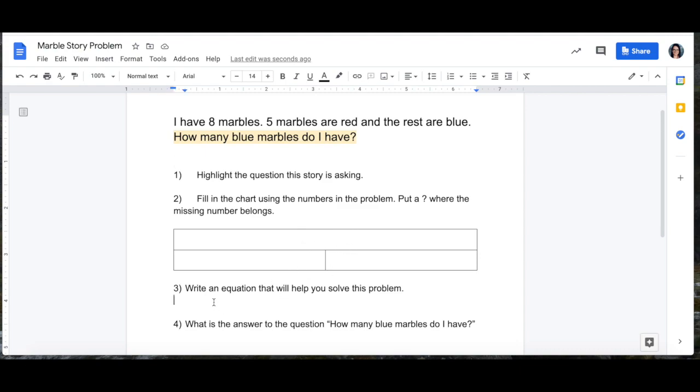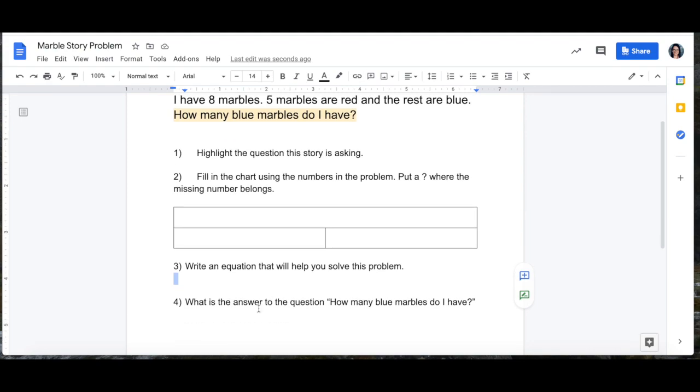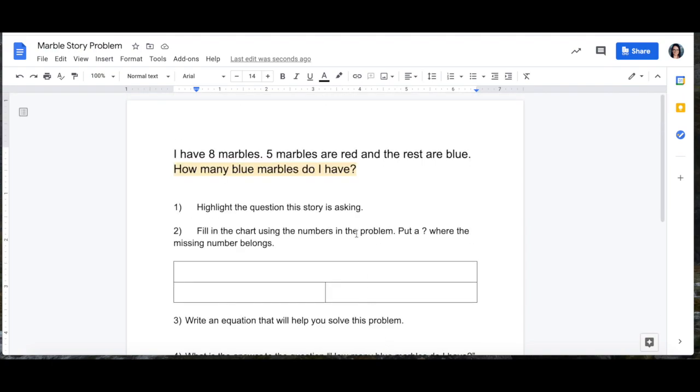For step three you'll write an equation that would help you solve the problem. It could be an addition equation or a subtraction equation. Whichever one works best for your brain. Then down here you're going to write the answer. There you go. Down here you're going to write the answer to the question, how many blue marbles do I have? And that's all for this Google Doc.